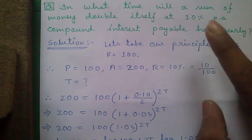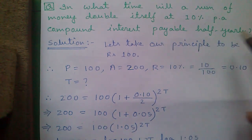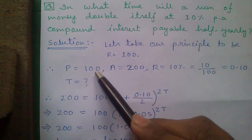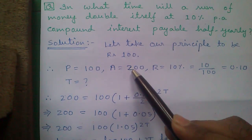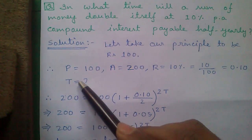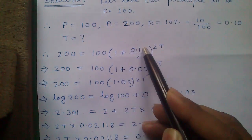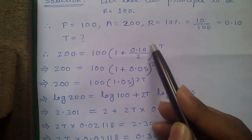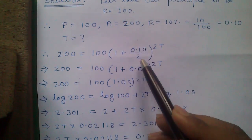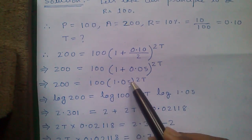Let's take another question: in what time will a sum of money double itself at 10% per annum compound interest payable half yearly? This question is almost the same; we just use the half-yearly formula. Let P = 100 rupees, so A = 200 (double), R = 0.10, and T is to be found. Putting into the formula: 200 = 100 × (1 + 0.10/2)^(2T) = 100 × (1.05)^(2T).